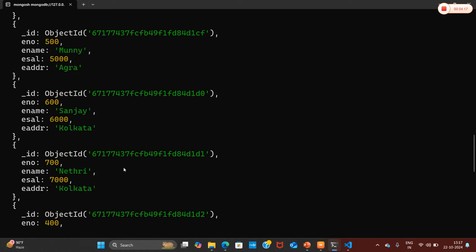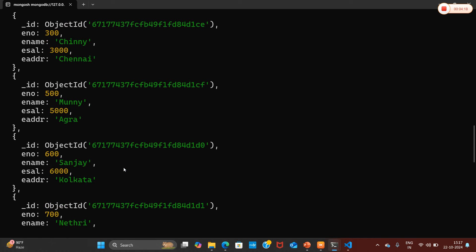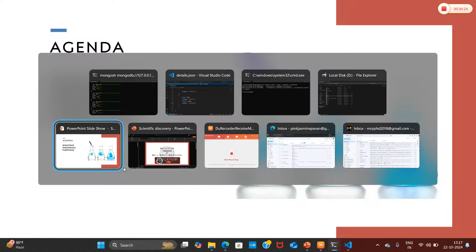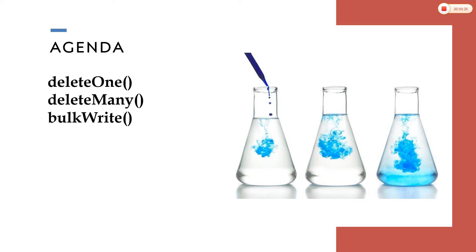Finding the documents once again, you can clearly see that the Kolkata documents were deleted successfully. In this way, deleteOne and deleteMany methods are used in MongoDB. Now moving to the next topic on the agenda: bulk write.